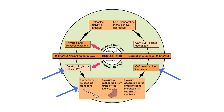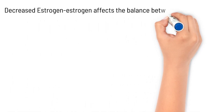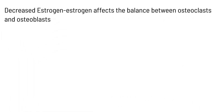So, how are these processes affected by osteoporosis? Osteoporosis can be caused by decreased estrogen. This happens during menopause. The drop in estrogen affects the balance between the osteoclasts and osteoblasts. The result is increased osteoclastic activity, which tends to decrease bone density.